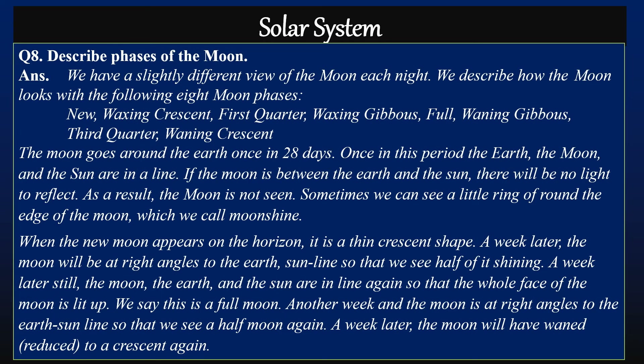A week later the moon will be at right angles to the earth-sun line so that we see half of the moon. Again, so that the whole face of the moon is lit up — in another week the moon is at right angles to the earth-sun line so that we see a half moon again. A week later the moon will have waned, that is, reduced to a crescent again.